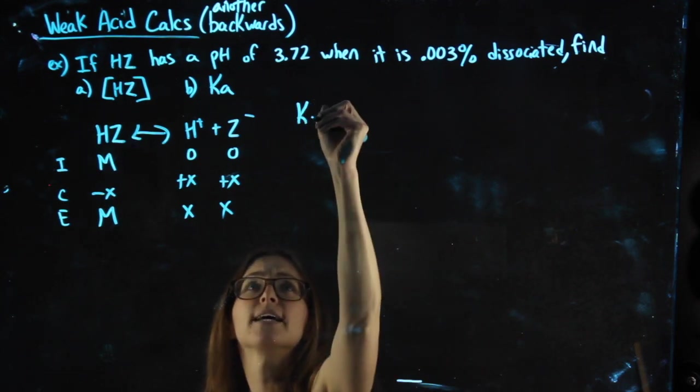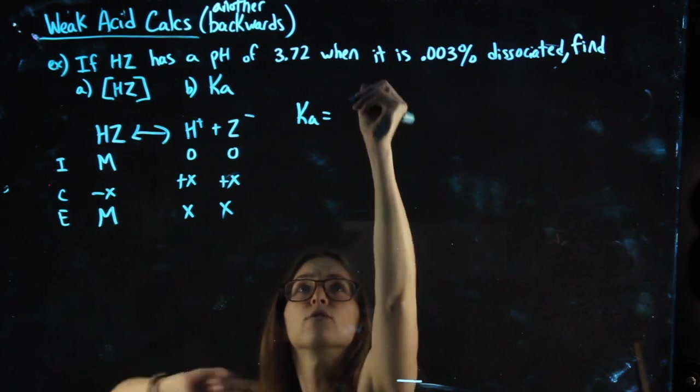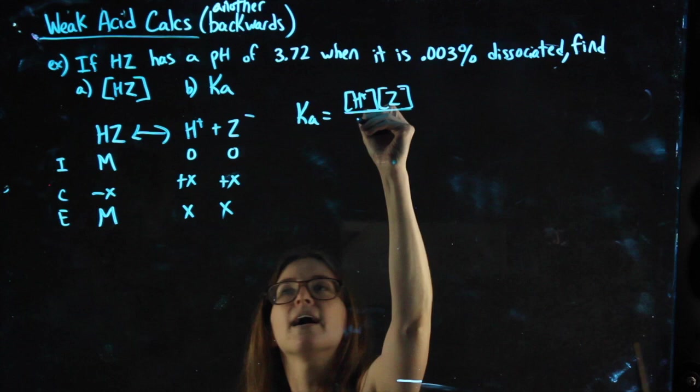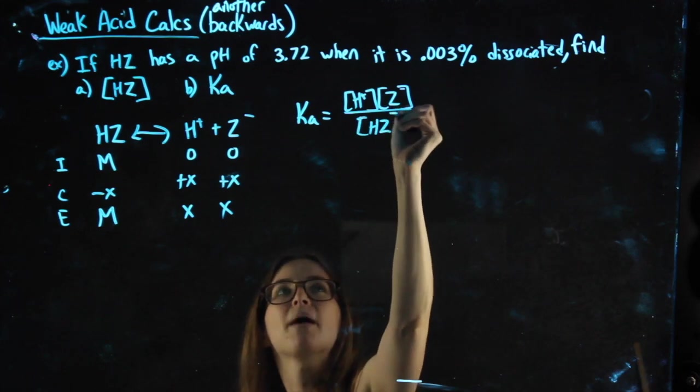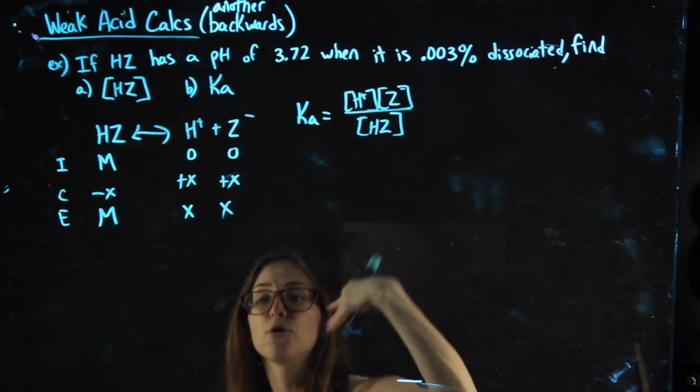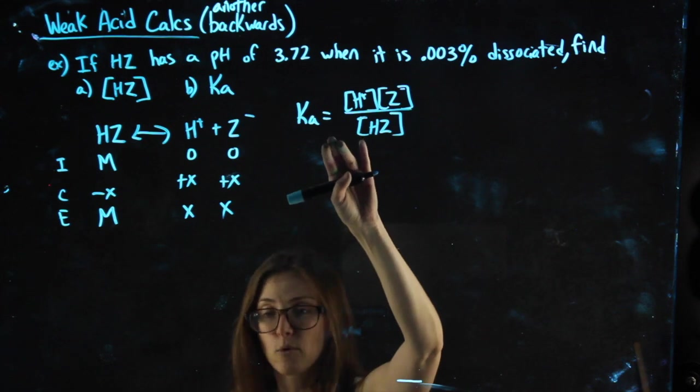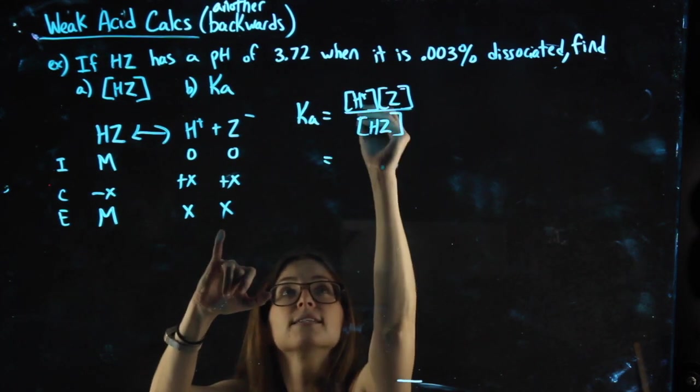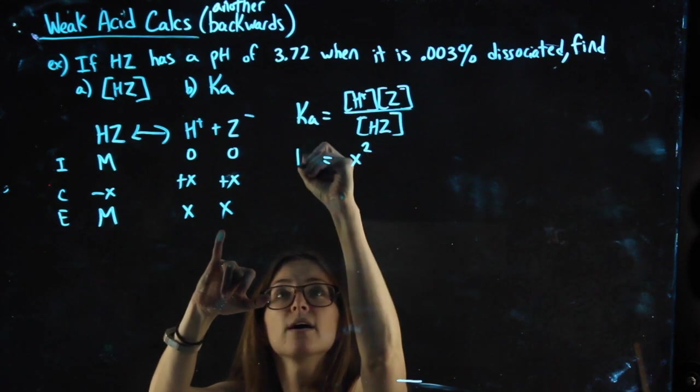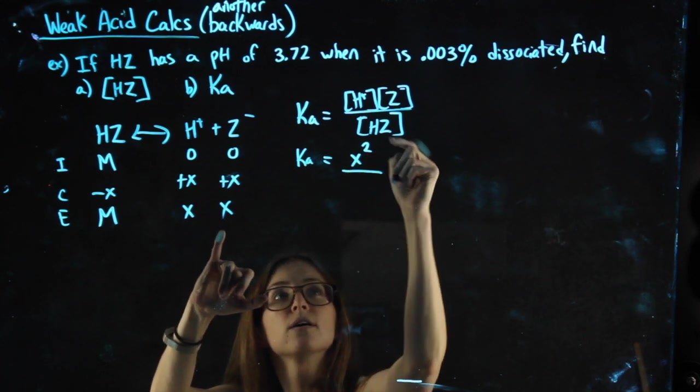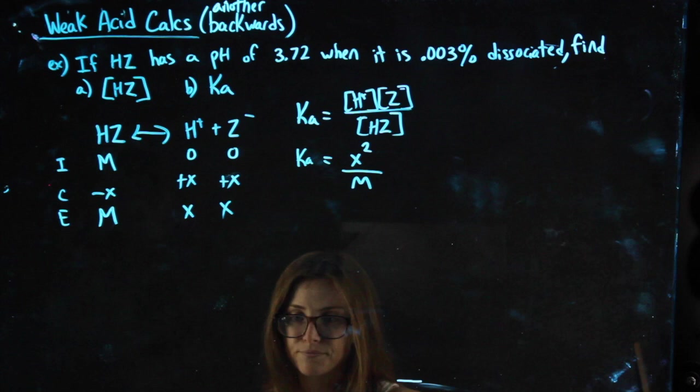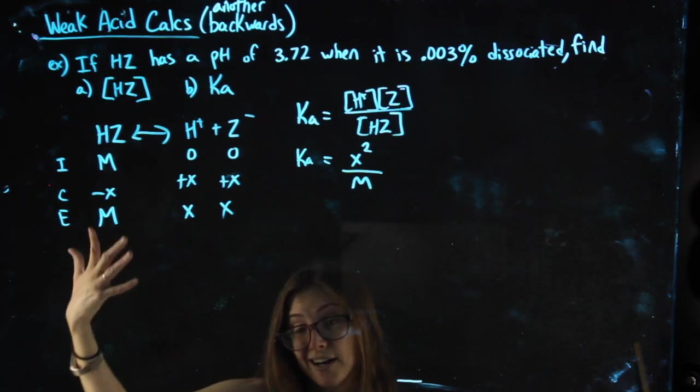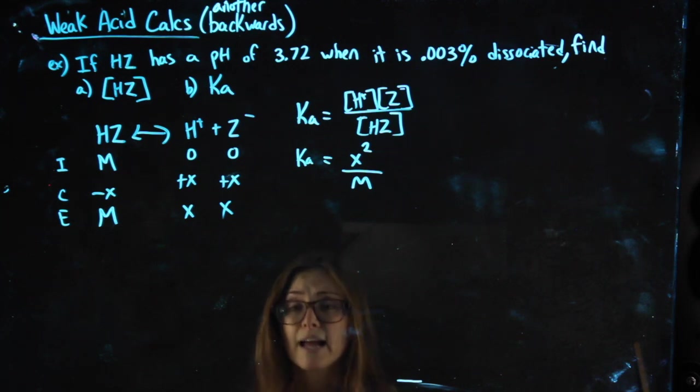I also can set up my Ka, products over reactants. And you might have felt out the pattern for this already. Know that when we're giving partial credit, there is a point for this setup. Plugging in our X's, X times X gets me X squared over M. That M came from here. Normally I have a number there. Here I don't. Okay, so I have my Ka.